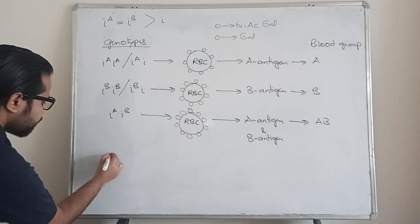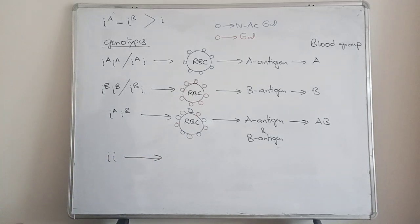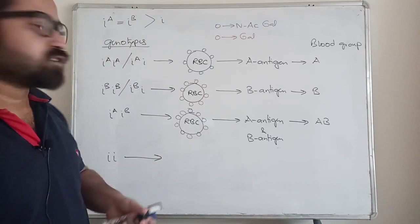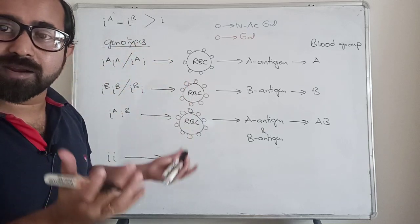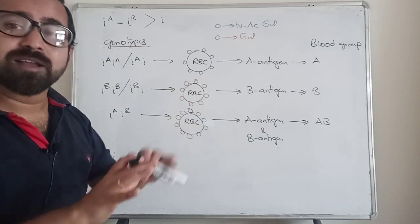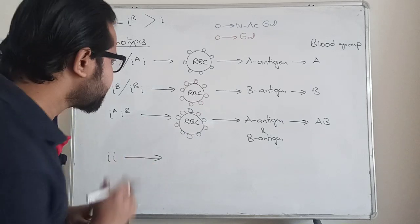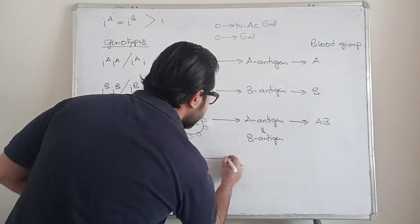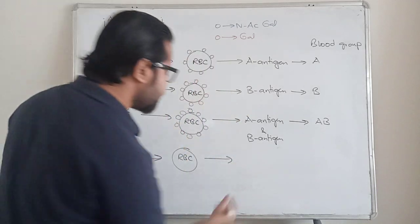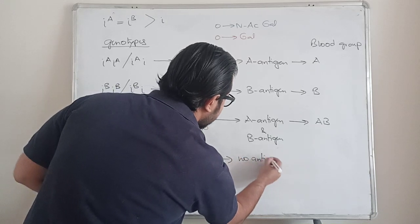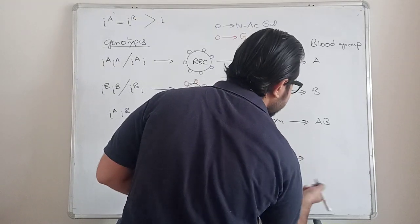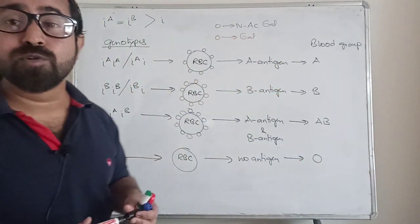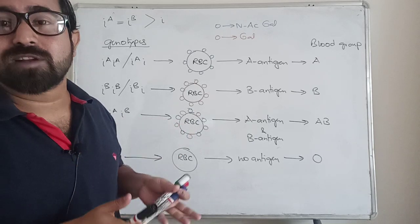Now imagine a situation where there are only i alleles present — genotype ii. The i allele does not add any kind of sugar on the RBC. So whatever normal glycoproteins or glycolipids are present on the RBC cell membrane, they will remain unchanged. The RBC will have neither A antigen nor B antigen — no antigen at all. If there is no antigen, the blood group is O. So technically, O blood group means there is no N-acetylgalactosamine and no galactose on the RBC surface.